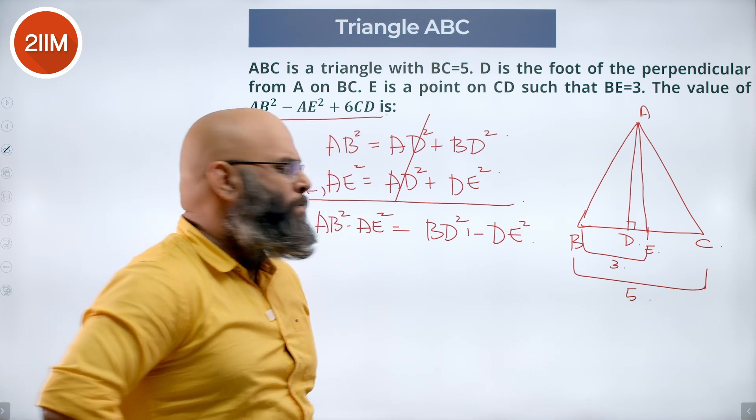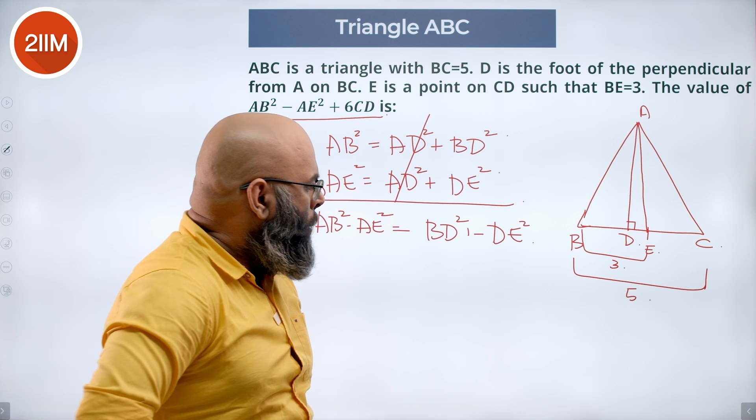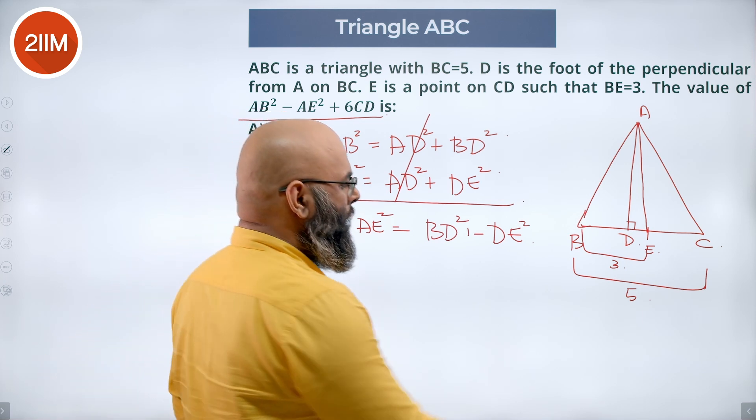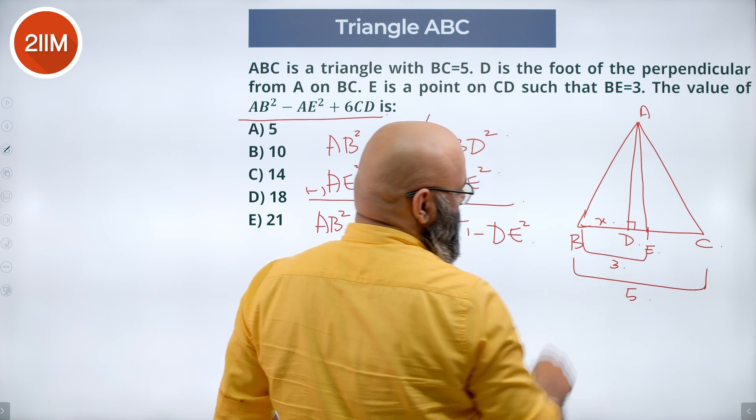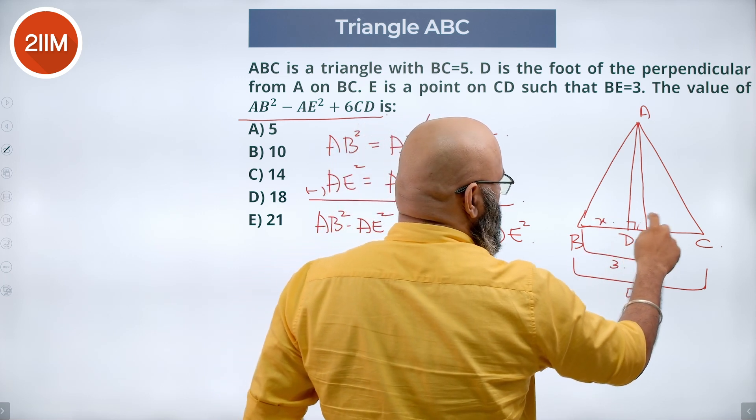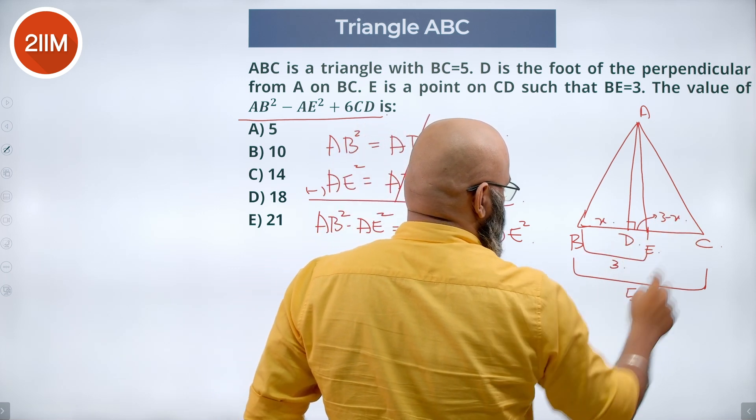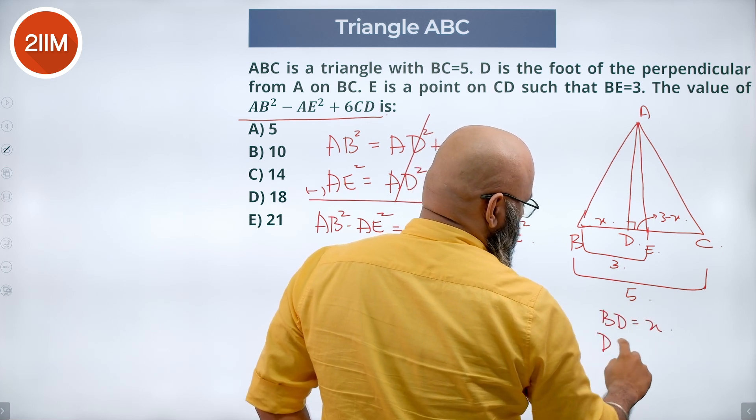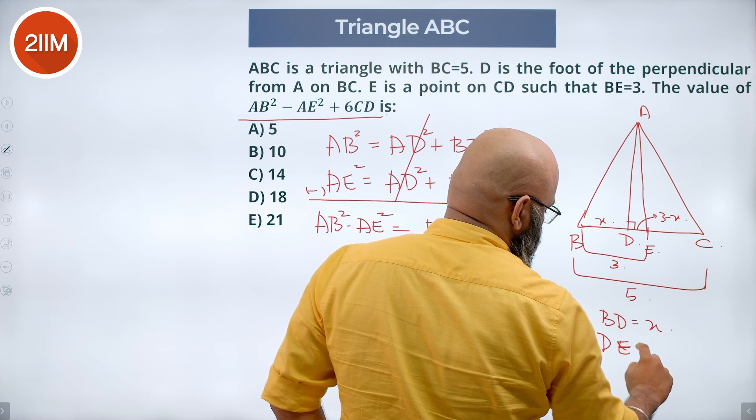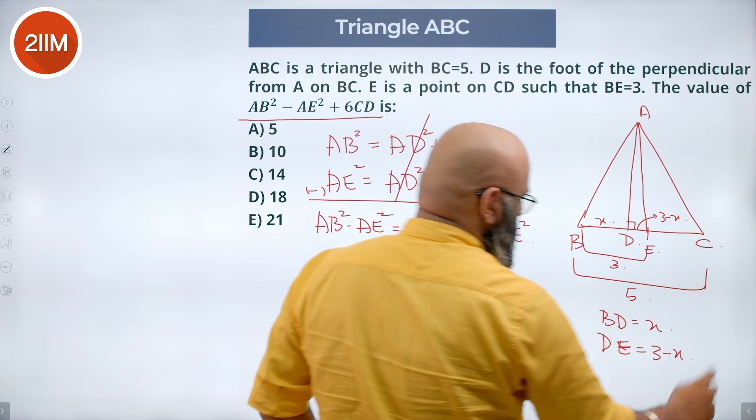We need to know the values of BD and DE. We know BE is 3. This entire part is 3. So let's say BD is X. So DE becomes 3 minus X. So BD is equal to X. DE is equal to 3 minus X. We can take that.